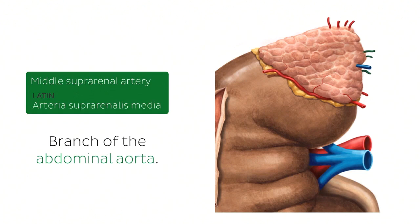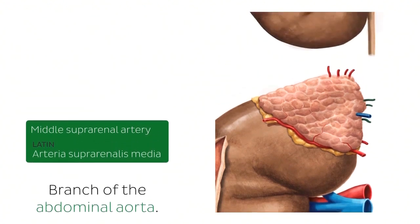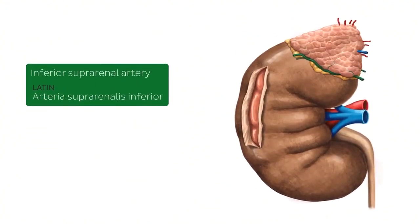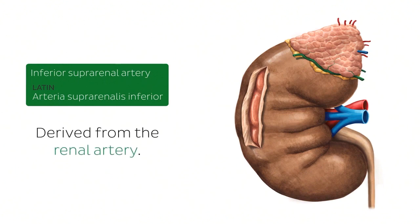As a final structure in this tutorial, we're going to talk about the inferior suprarenal artery. The inferior suprarenal arteries supply the suprarenal glands and are derived from the renal artery, which is itself a branch of the abdominal aorta.